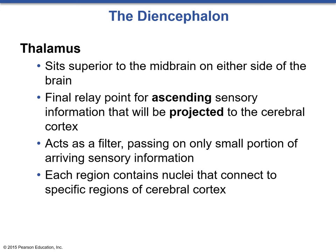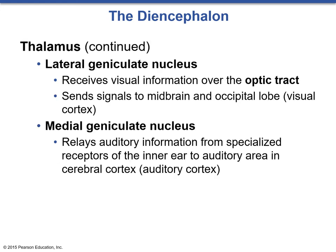Remember that ascending information is sensory and descending information is motor. The lateral geniculate nucleus is going to project visual information from the eyes to the occipital lobe. The medial geniculate nucleus is going to deal with auditory information and transfer auditory information from the vestibulocochlear nerve to the temporal lobe in the brain.